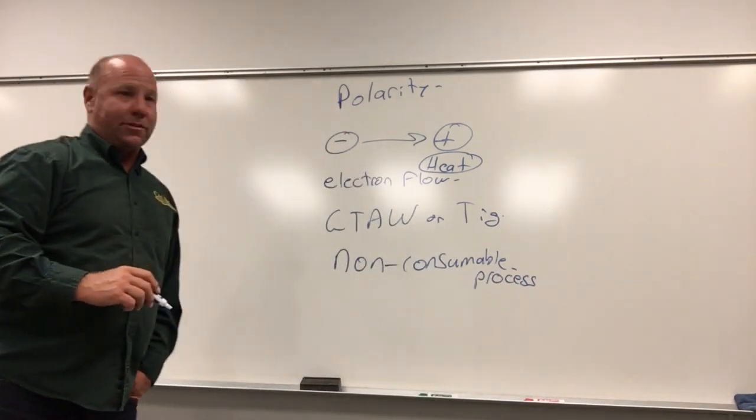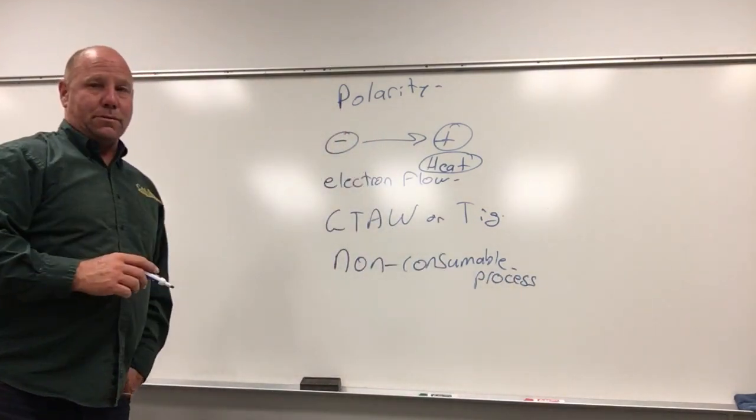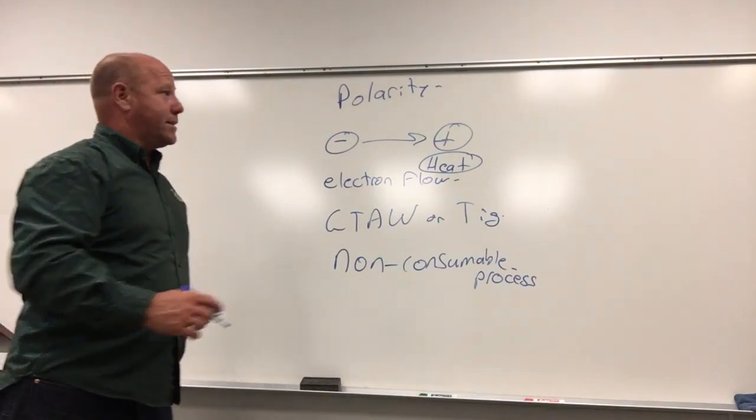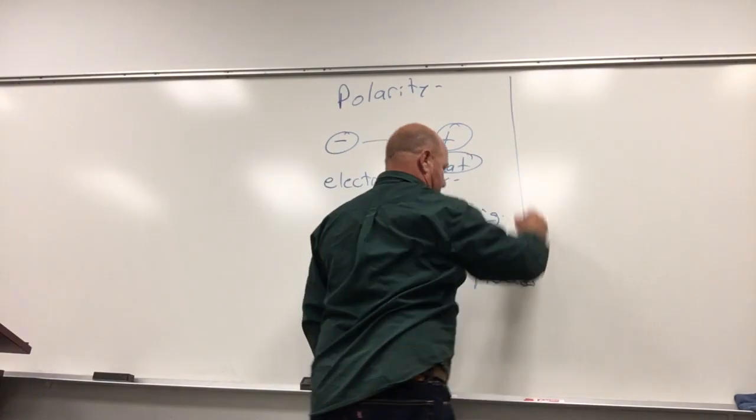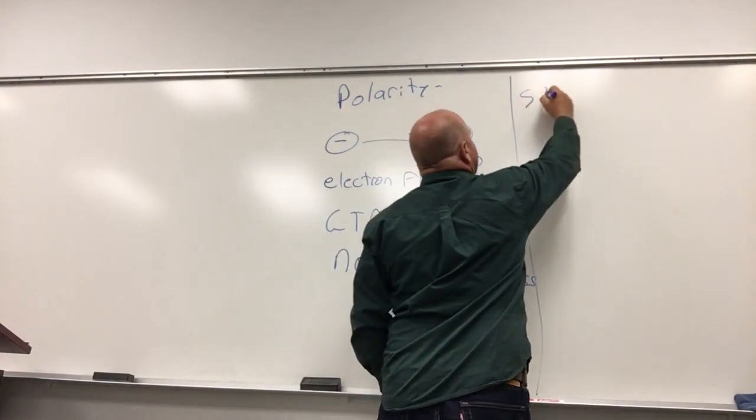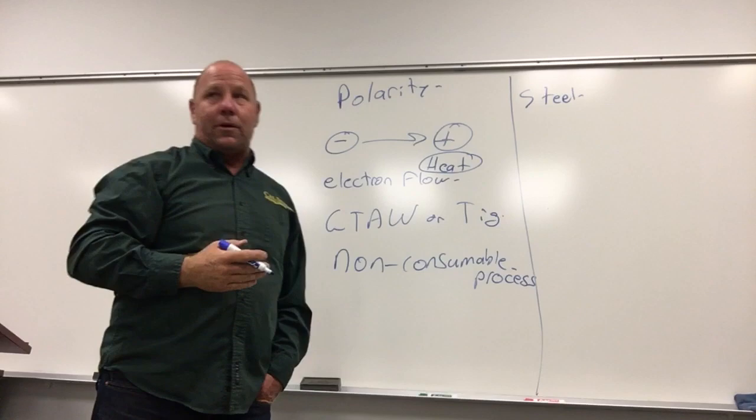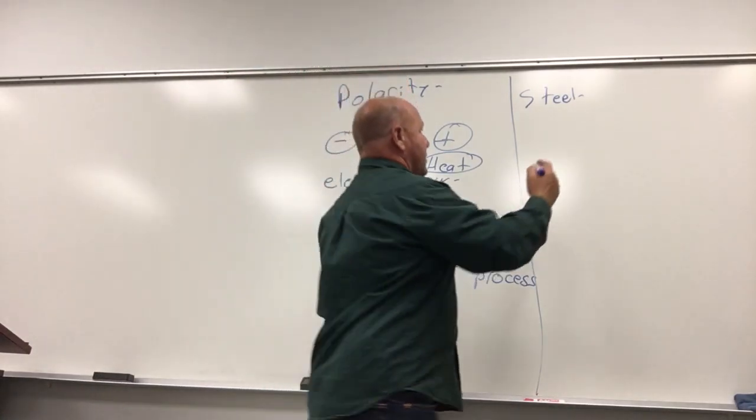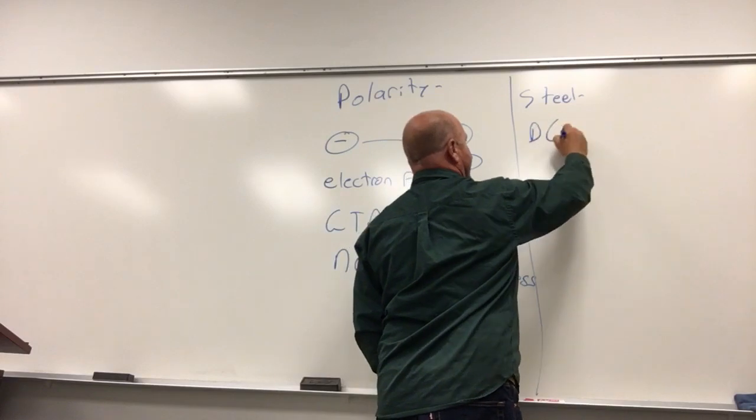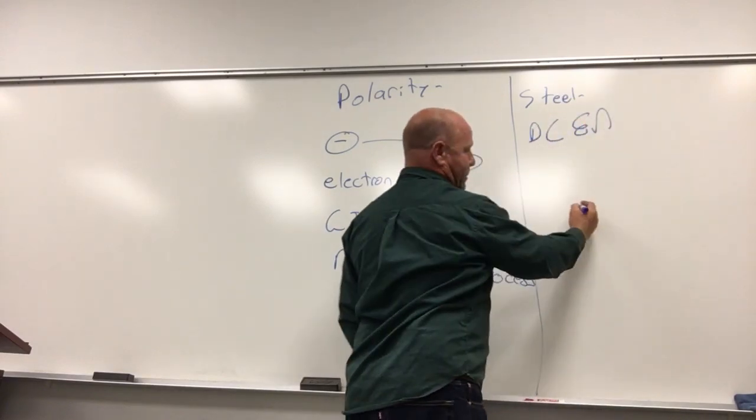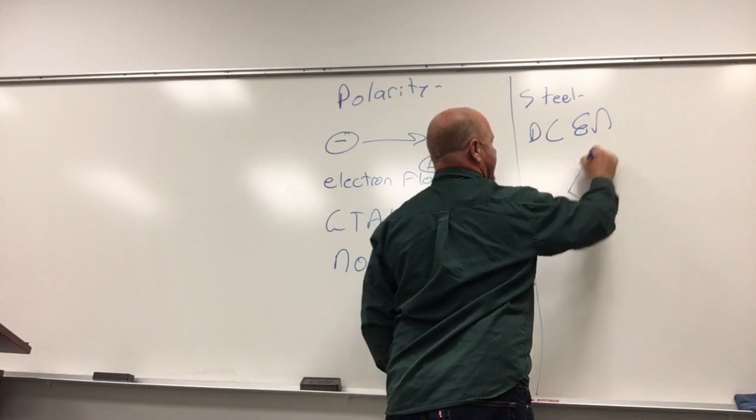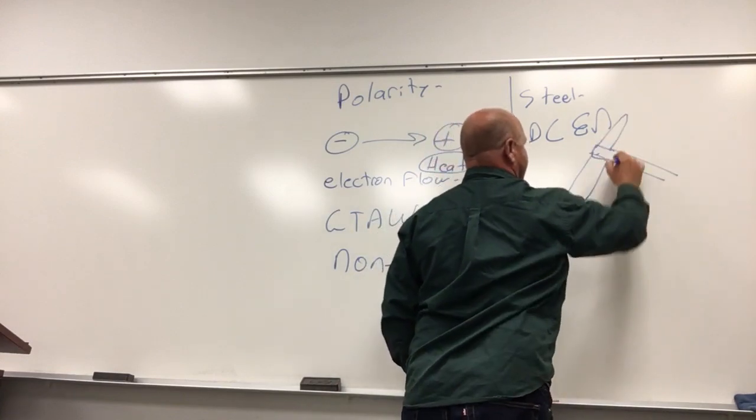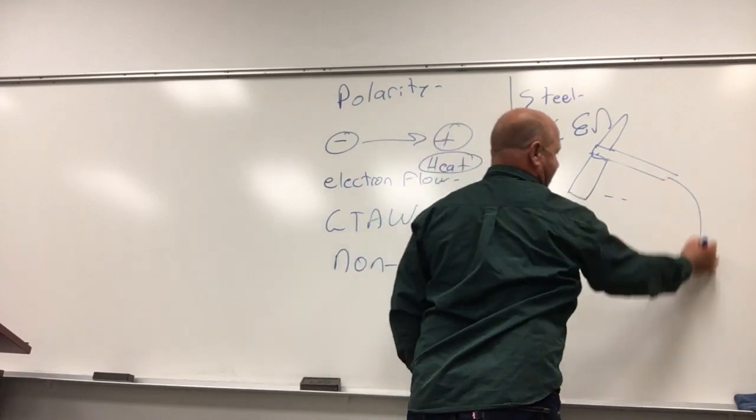Non-consumable process operates in a certain way. Generally speaking, when we were welding steel, and this also works if you're welding copper, a couple other, titanium as well, you're going to use DC electronegative. That means that the gun, the cup of the gun, your little TIG torch, the cup of the gun is attached to the negative terminal.